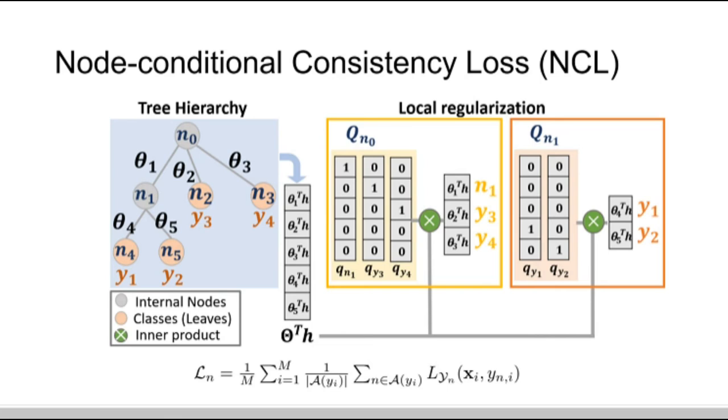In addition to the global regulation from STS nodes, we can also enforce local regulation with the node conditional consistency loss at each internal node. For example, the orange box aims to classify samples from Y1 and Y2, so it focuses on training the parameters of theta4 and theta5.